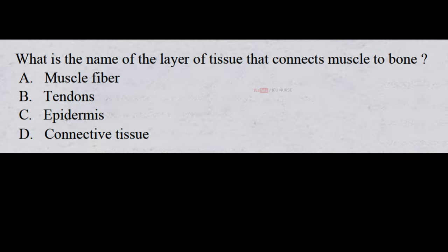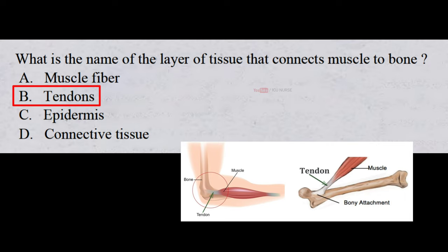What is the name of the layer of tissue that connects muscle to bone? A. Muscle fiber. B. Tendons. C. Epidermis. D. Connective tissue. And the correct answer is B. Tendons.